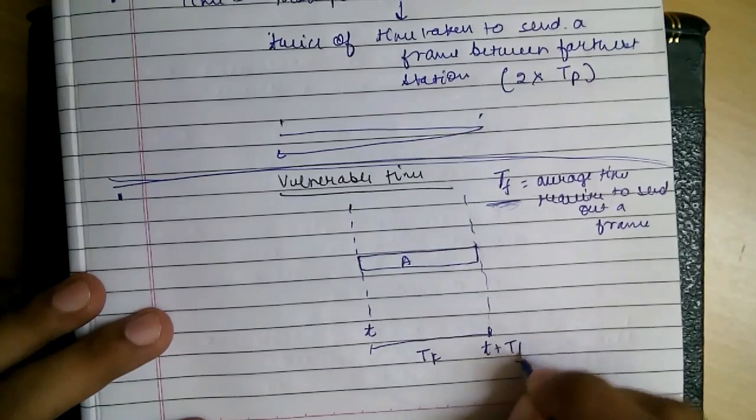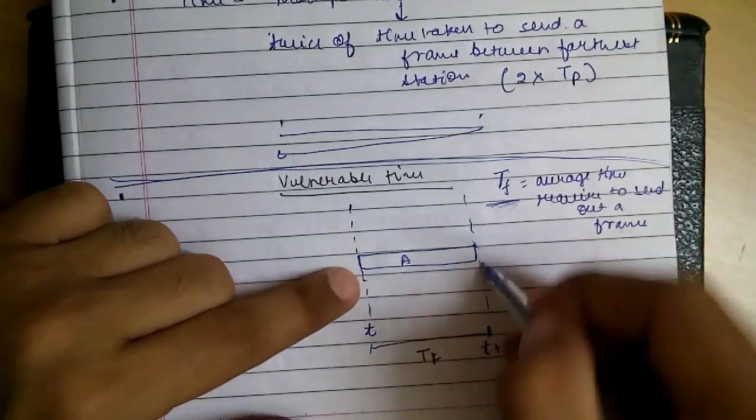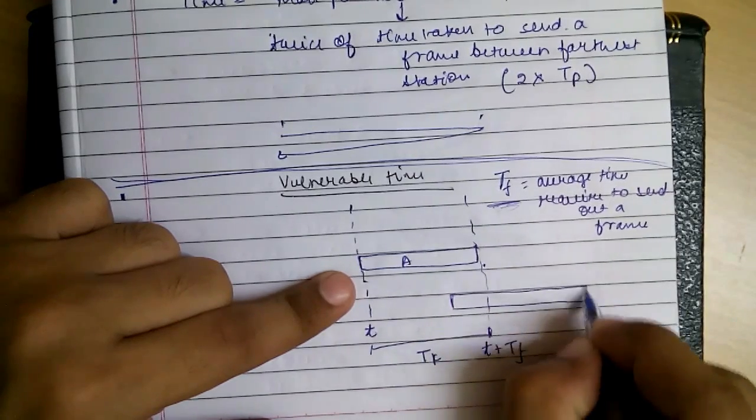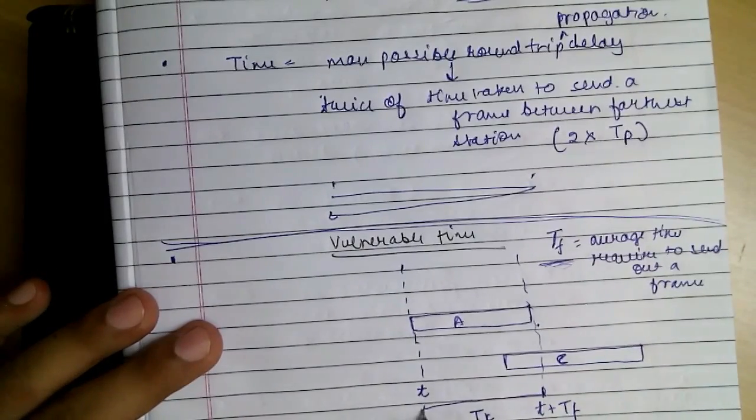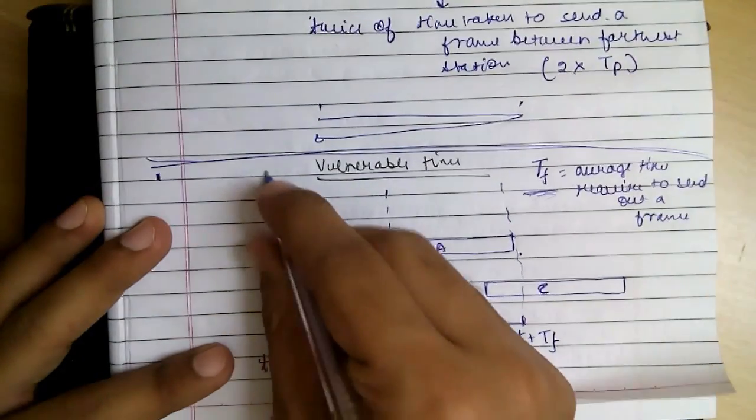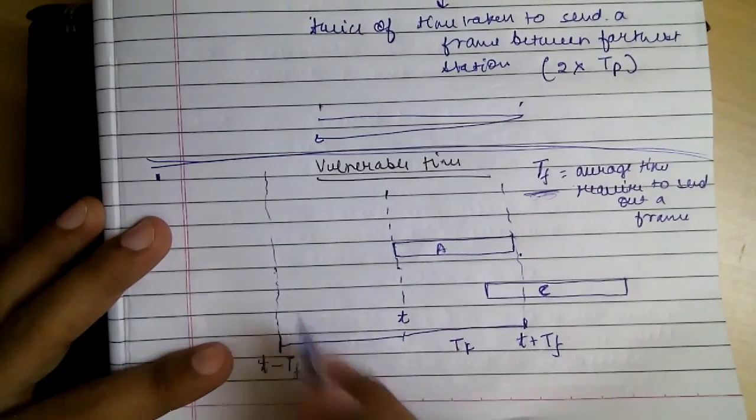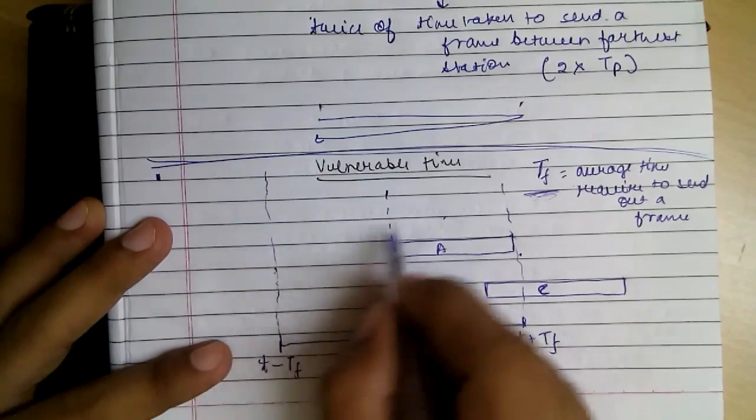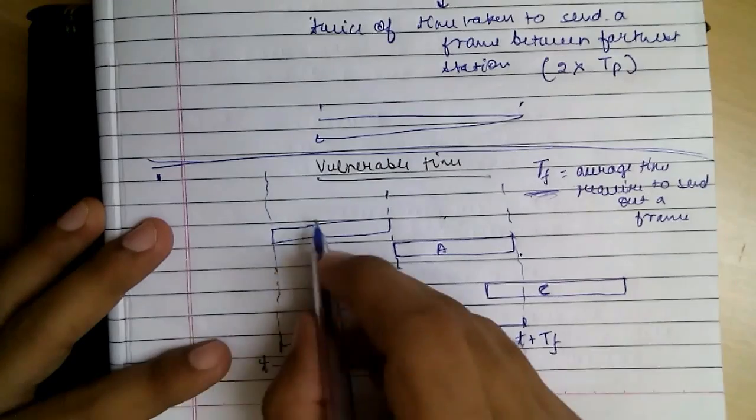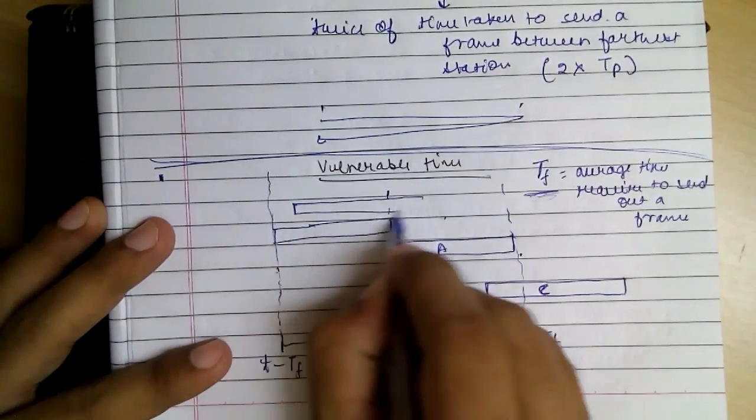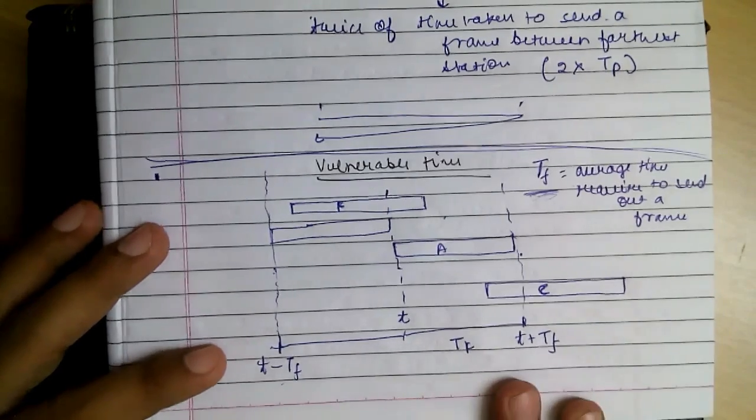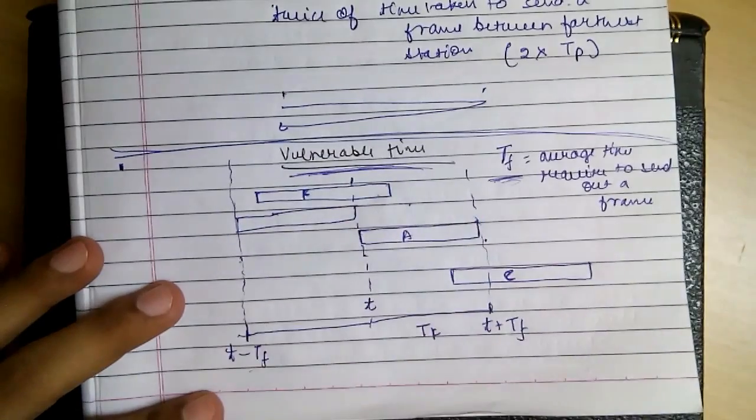Any frame from T to T plus TF if another frame is there, there will be a collision. Similarly if we go back this side, that is T minus TF. If a frame is sent after this time, there will be a collision with A. If a frame is sent just at this point it will finish before A starts. But any frame after this time will collide with A as it overlaps.